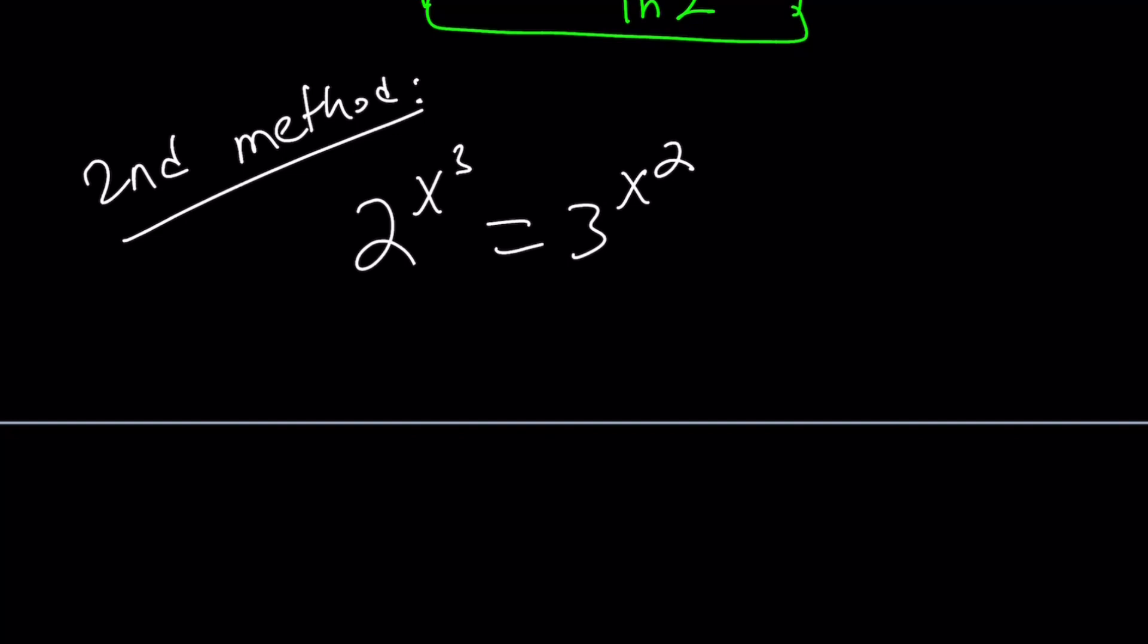So we can basically write 2 to the x cubed as 2 to the power x to the power x squared, and the second one is just 3 to the power x squared. I put the 3 in parentheses to emphasize the fact that both have the x squared.